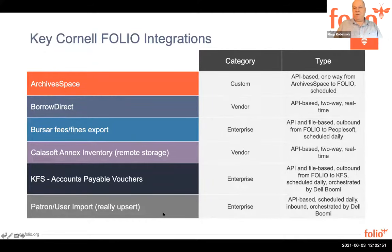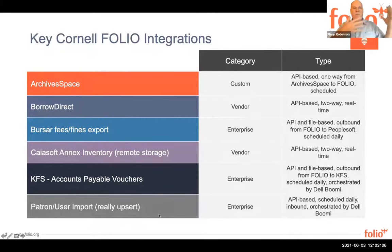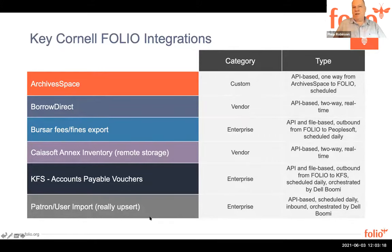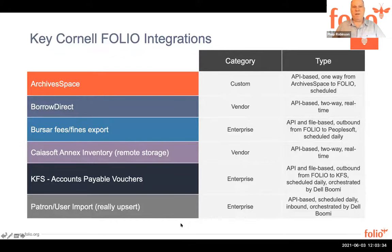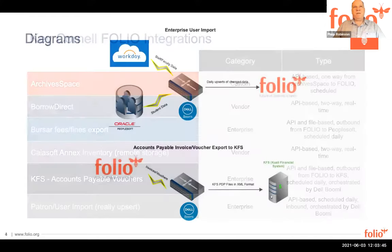The patron user import is of course important to most of you. In our case we're using the Dell Boomi tool with our central integration team — it's API-based, scheduled daily. It's really an upsert, meaning it checks whether someone in the enterprise identity management systems is already in our Folio instance. If they are, it checks if any data has changed and automatically updates it. If they're not in the system at all, it adds them with no permissions. It only detects deltas, so it runs very quickly — sometimes just a few minutes, depending on how many changes have happened at Cornell.